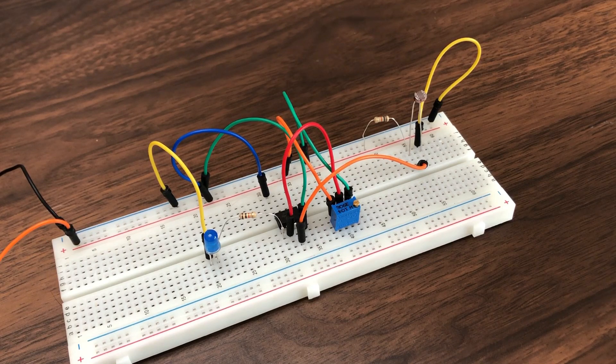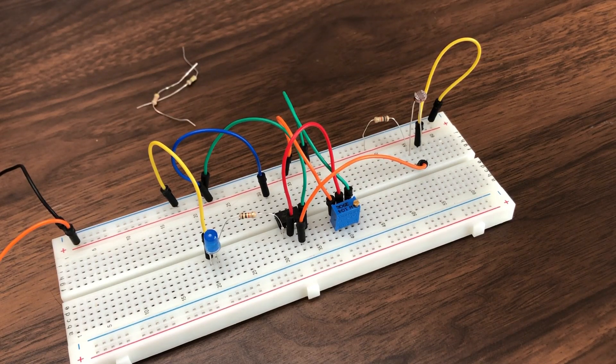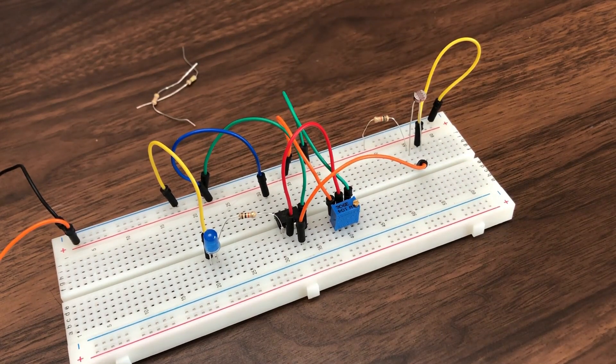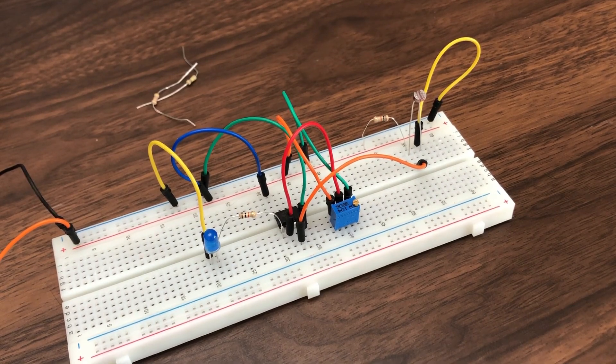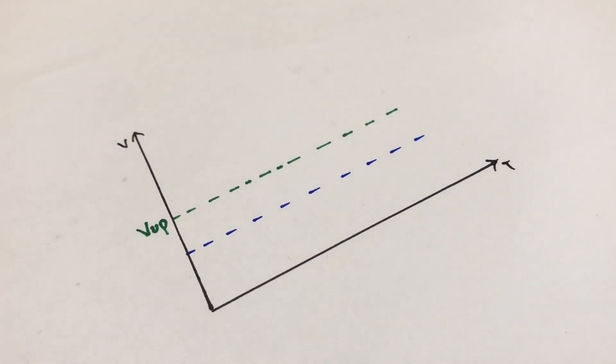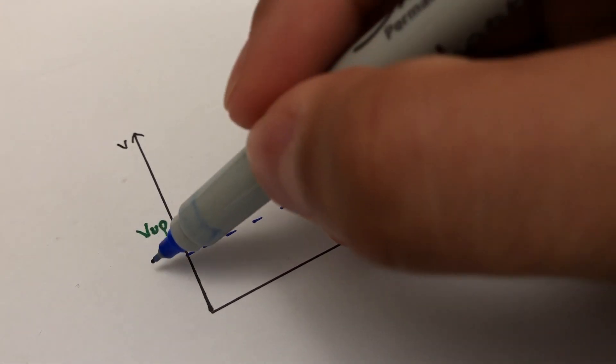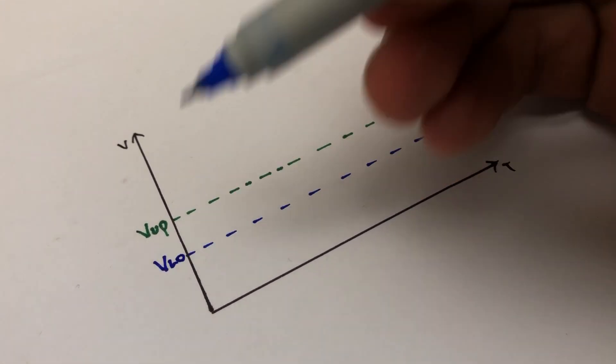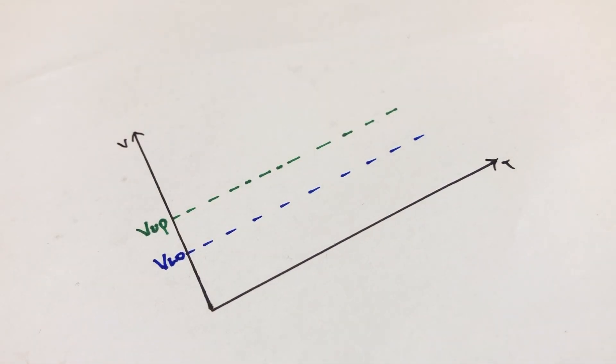Adding just two more resistors in this existing comparator circuit, we can fix all these problems. By using these two resistors, we can create an upper threshold and a lower threshold. So rather than switching the output on a fixed reference point, we now have two thresholds.